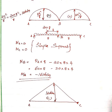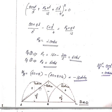The final bending moment diagram shows positive values (sagging) in the spans and a negative value (hogging) at the intermediate support B. The diagram consists of a parabolic curve combined with straight lines, representing the complete bending moment distribution for this continuous beam.